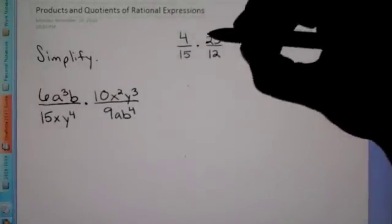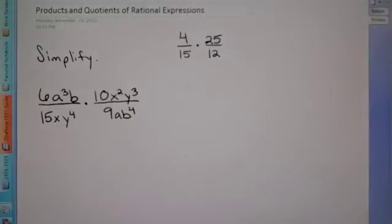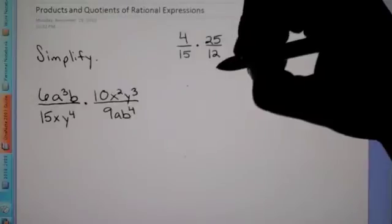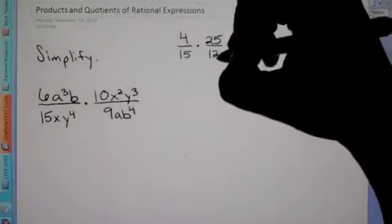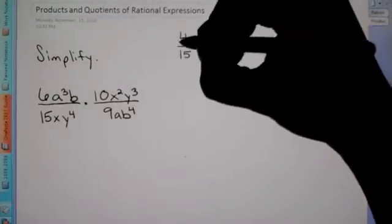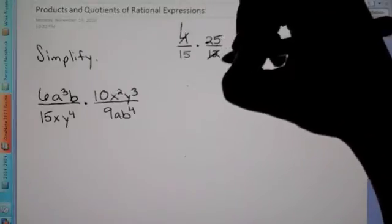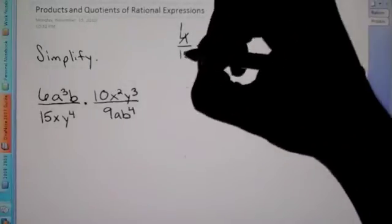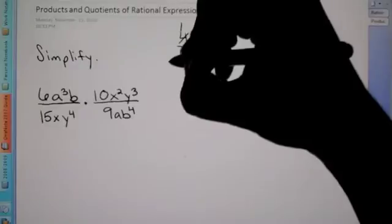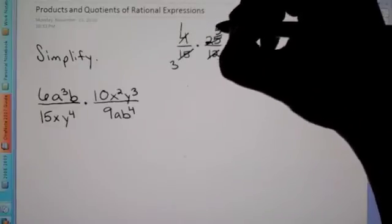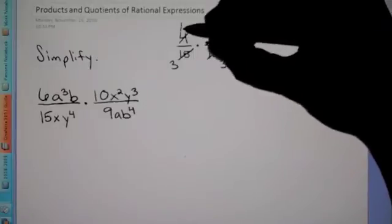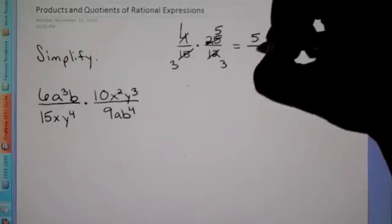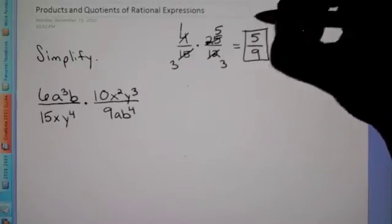Let's start off with this product and quotient. The concept we're dealing with is reducing diagonally or vertically. We know that 4 over 12 — we could divide both by 4, so the 4 becomes a 1 and the 12 becomes a 3. Same thing diagonally with the 15 and the 25: divide by 5, this becomes a 3, that becomes a 5. Now we just multiply across: 1 times 3 is 3, 3 times 3 is 9. So we end up with 3 ninths — wait, 5 ninths as our answer.